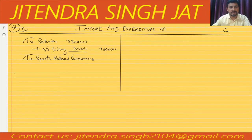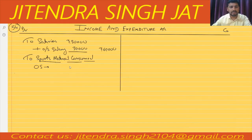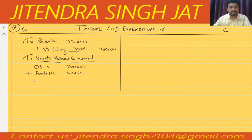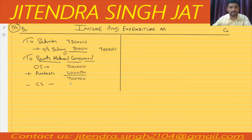Opening stock of sports material is 3 lakh. We add purchases during the year: 4 lakh. So 3 plus 4 equals 7 lakh. Then we subtract the closing stock, which is 6,50,000. So only 50,000 is the sports material consumed during the year.